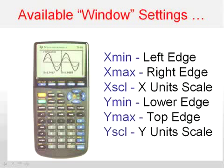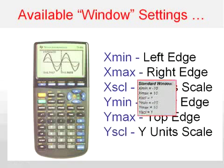Now as I said before, unless you change it, the standard window is going to go from negative 10 to 10 for x's, and from negative 10 to 10 for y's, and the scale is going to be one to one.